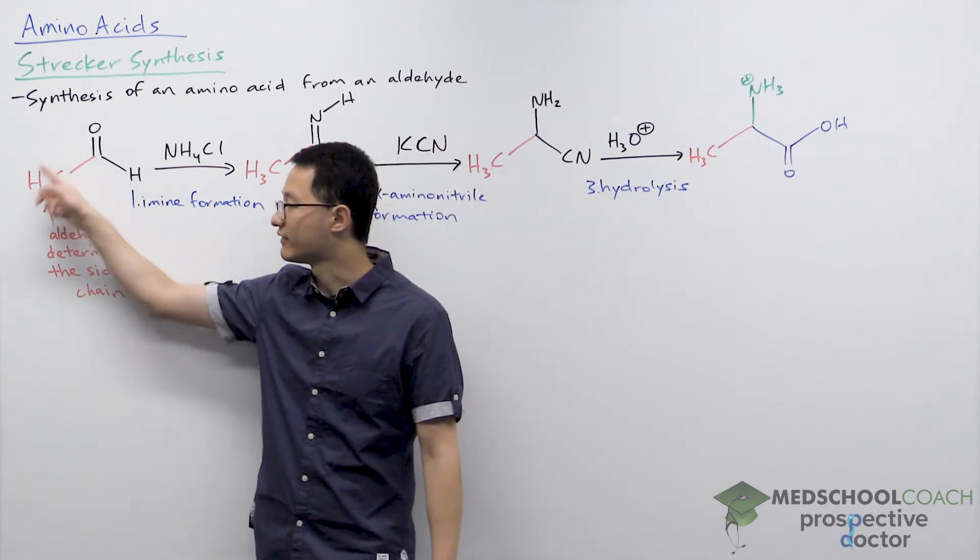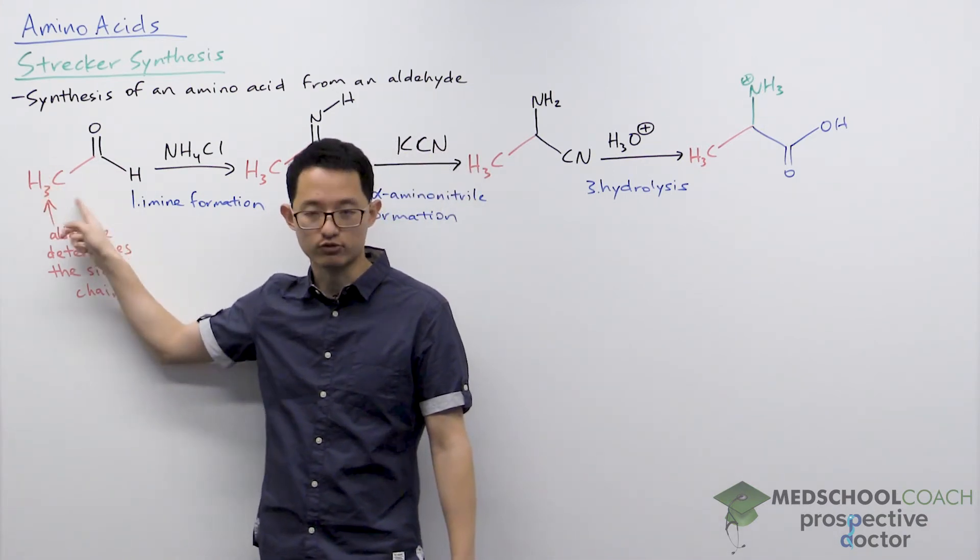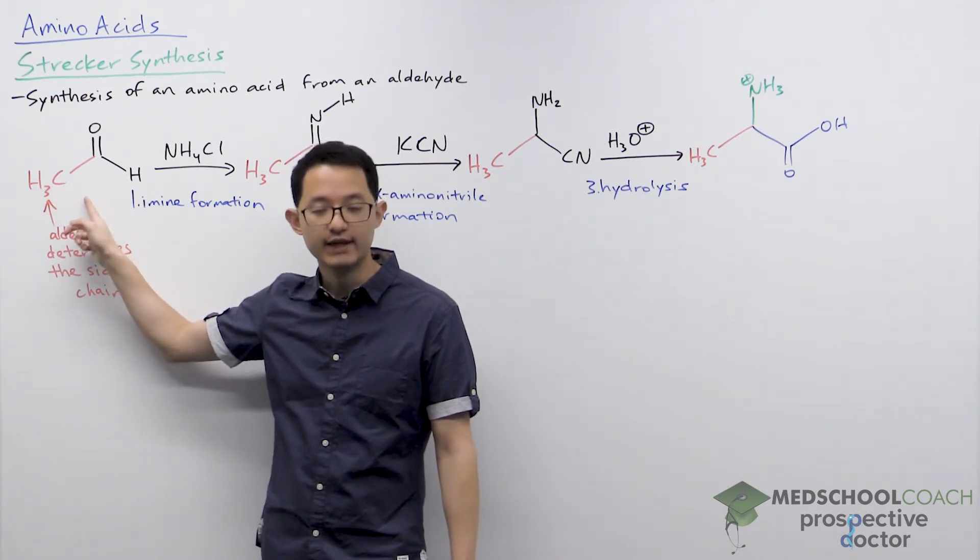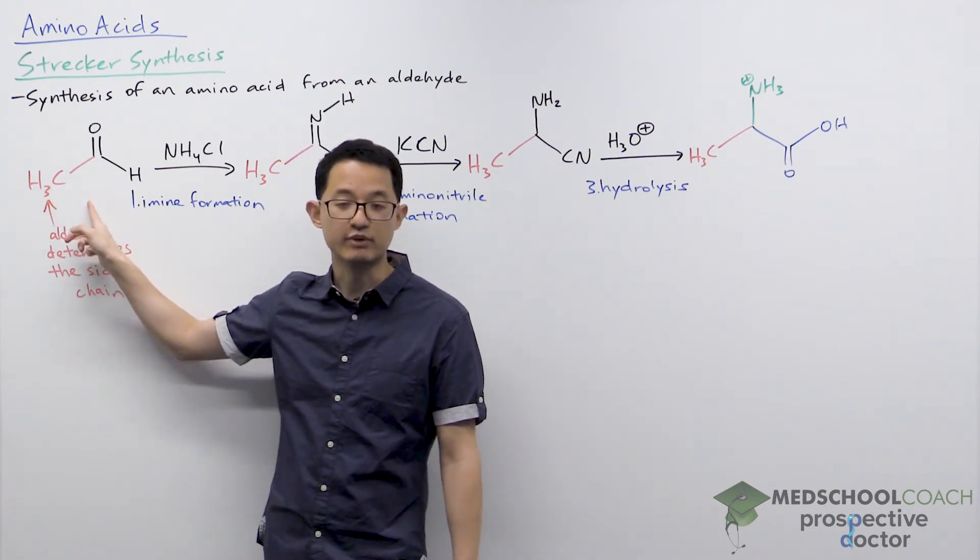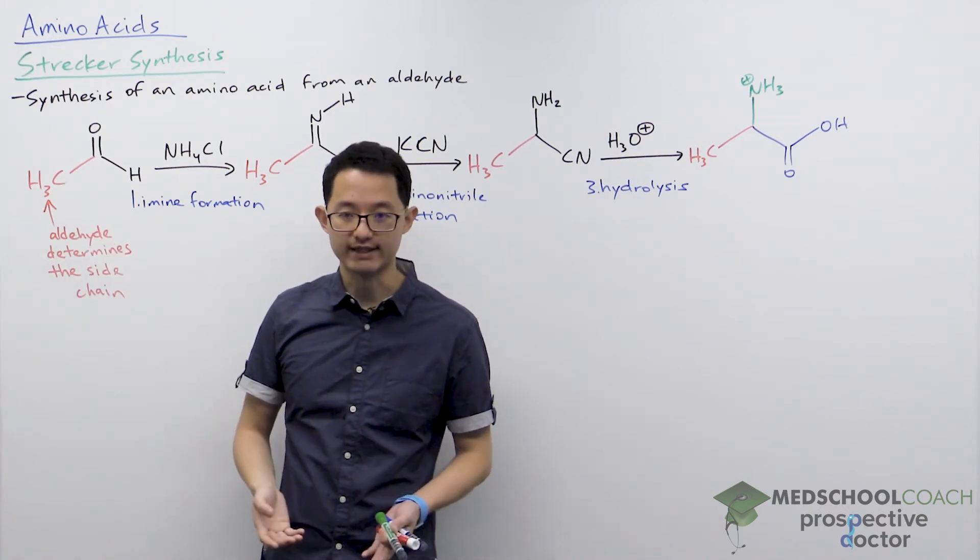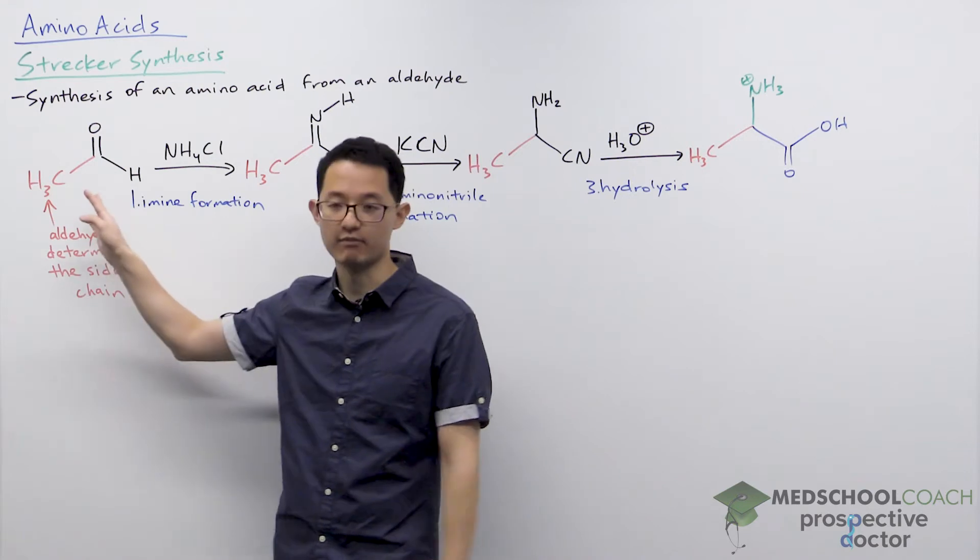You can see here we have in red this methyl group, CH3. The CH3 is going to be the side chain of the amino acid we produce, which means in this case we're trying to produce alanine, whose side chain is a methyl group.